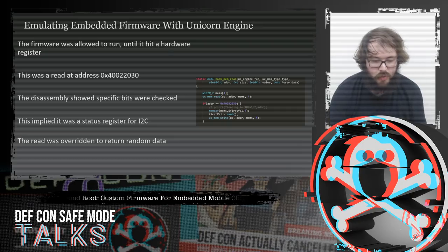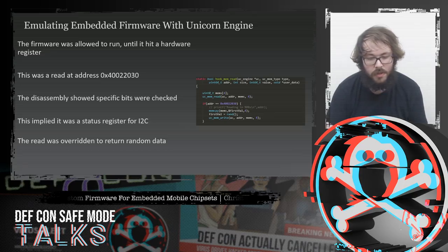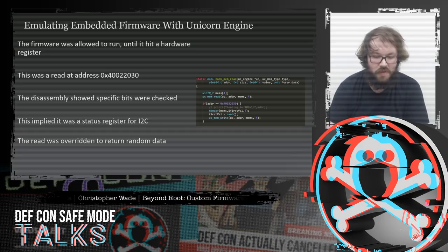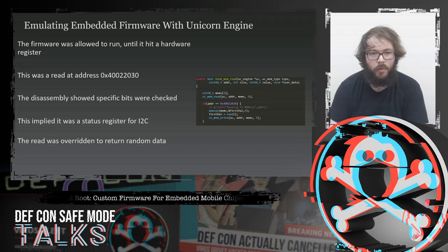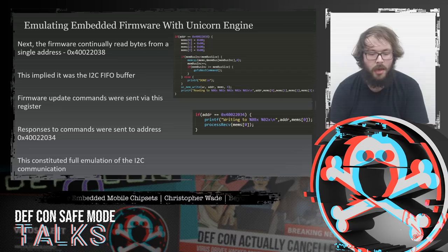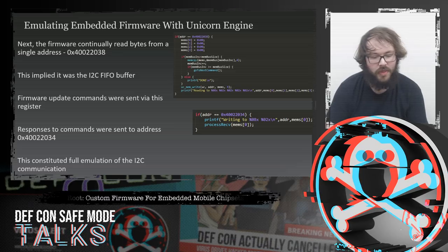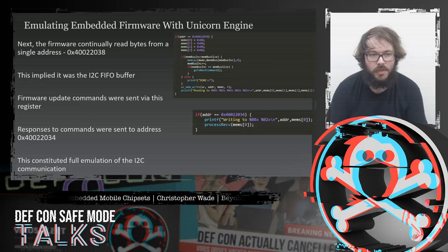The firmware ran until it hit another hardware address — all hardware addresses started with 0x400 or 0x500. The address it hit was 0x40022030, and analyzing the assembly showed it was checking for specific status bits, indicating an I2C interface. After implementing this, it moved to the next stage and made the firmware continually read bytes from 0x40022038 — the I2C FIFO buffer. By sending bytes normally used for firmware updates via this Unicorn interface, I found the chip started writing responses on 0x40022034, giving me full I2C emulation without ever touching the physical chip.